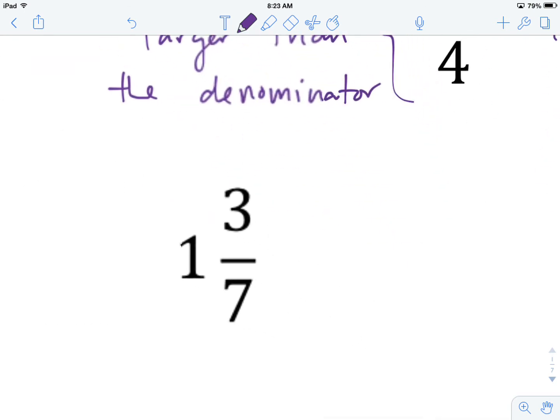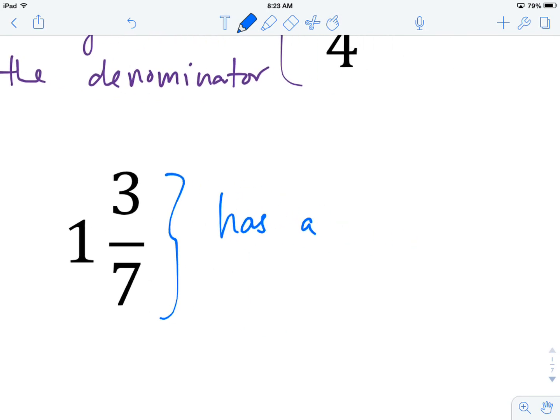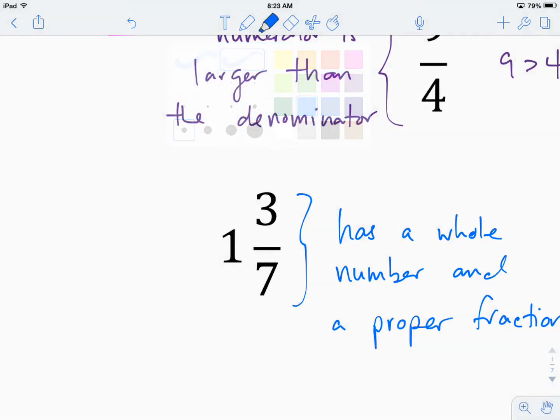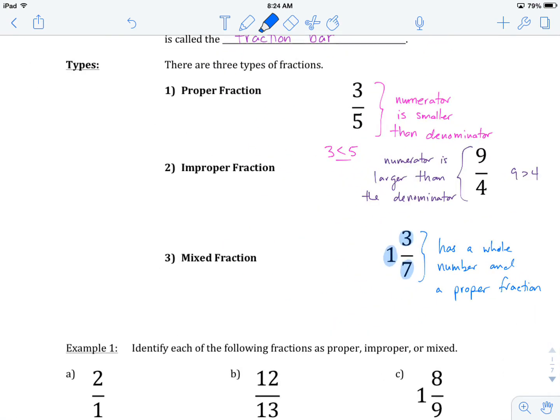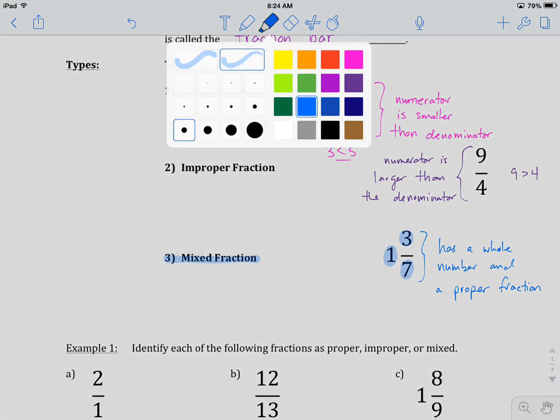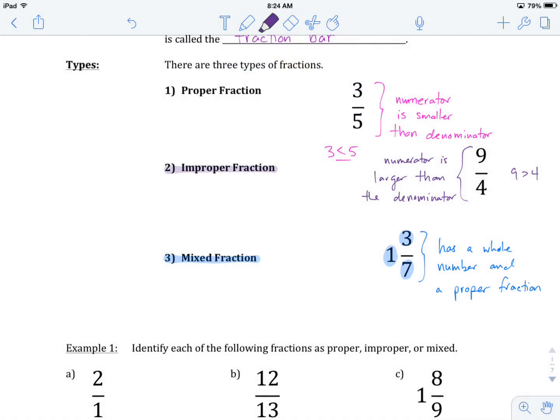Now to the last one, a mixed fraction. A mixed fraction has a whole number and a fraction. We'll be really specific, we'll say a proper fraction. And we can see that to be true, because here we have our whole number kind of sitting out front, and then a proper fraction, because three is smaller than seven. So those are our three types: mixed fraction, a whole number and a proper fraction; improper fraction, larger numerator than denominator; and proper fraction, smaller numerator than denominator.